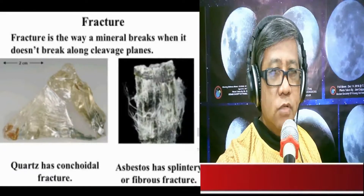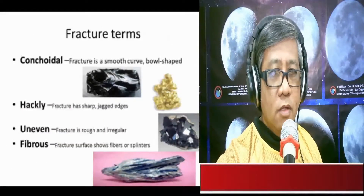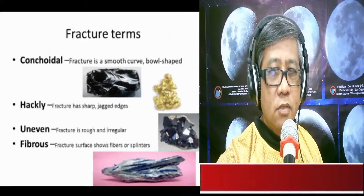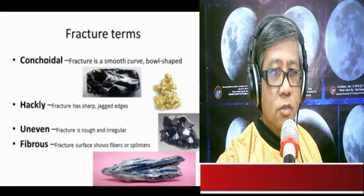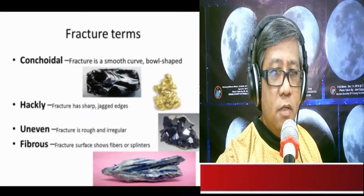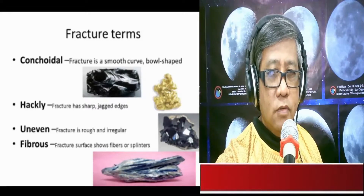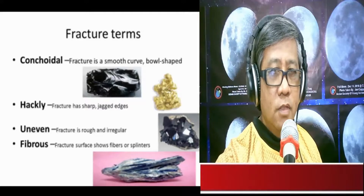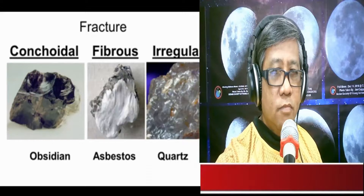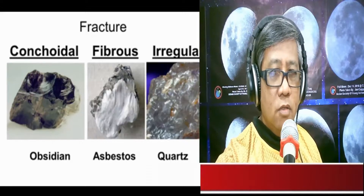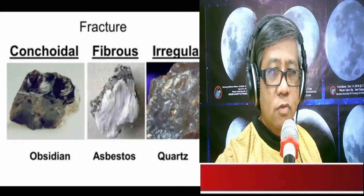The types of fractures include: conchoidal — the fracture is a smooth curve and bowl-shaped; hackly — the fracture has sharp jagged edges; uneven — the fracture is rough and irregular; and fibrous — the fracture surface shows fibers or splinters. Obsidian exhibits a conchoidal fracture, while asbestos shows a fibrous fracture.